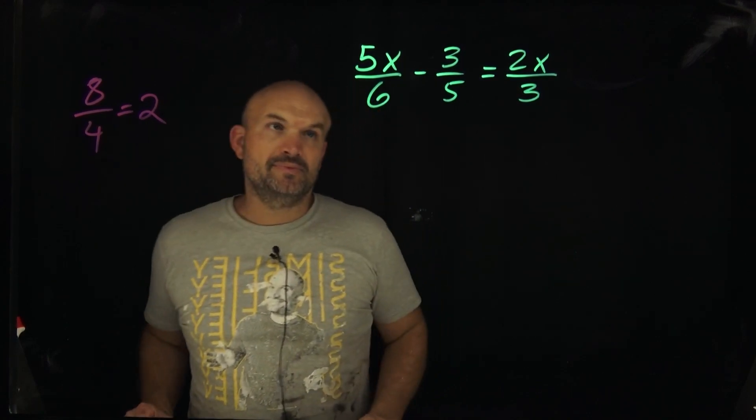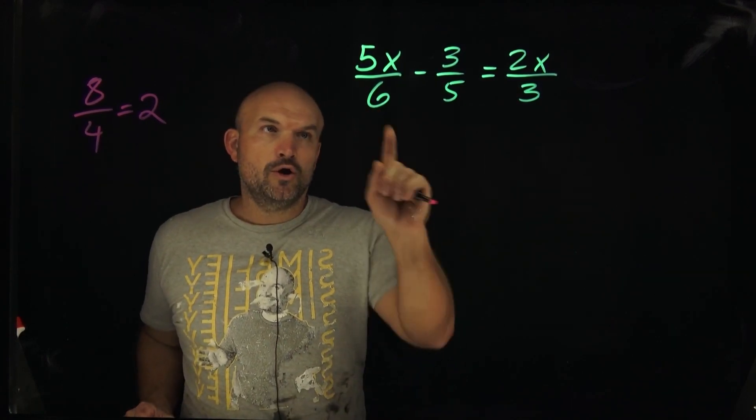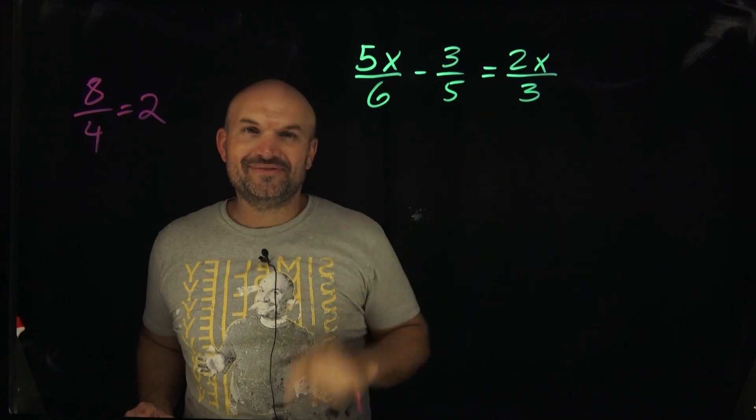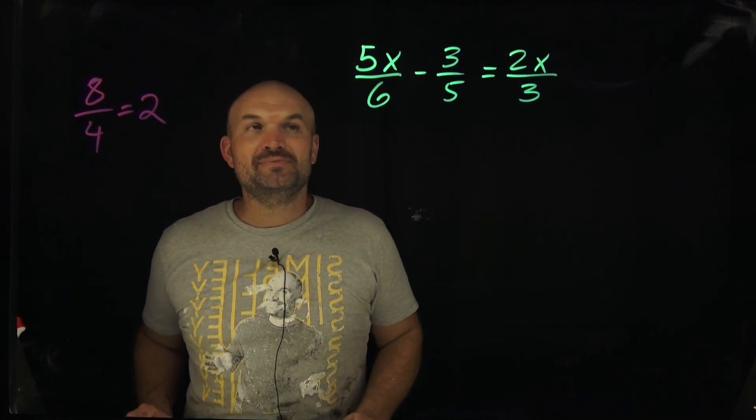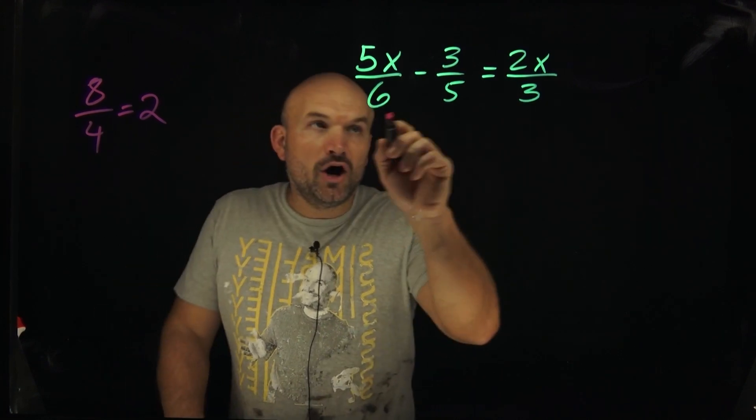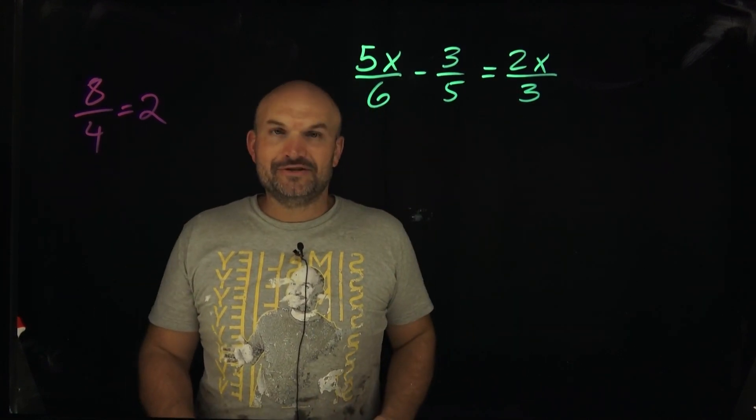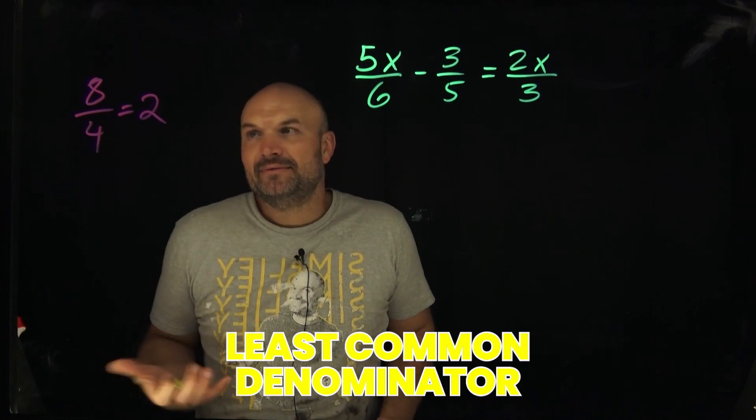Now here's the problem. We don't have just one denominator. We have one, two, three different denominators, and they're all different. So what we need to do is find the smallest number that all three of our denominators divide into. And we call that the least common denominator.